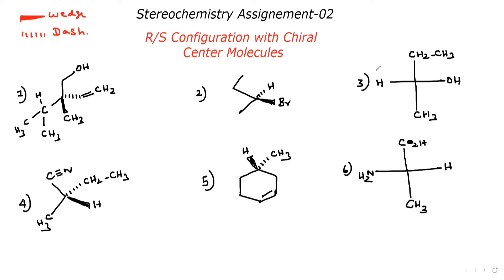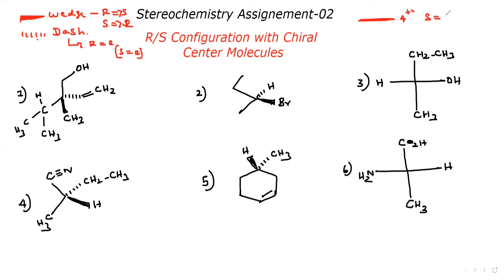Before going to the questions, I'm going to give a small summary. In flying wedge projection, when the fourth group is in a wedge, we have to convert R to S or S to R. That is, fourth group in dash: R isomer becomes S isomer. This is Fischer projection — the horizontal line fourth group is also converted accordingly.